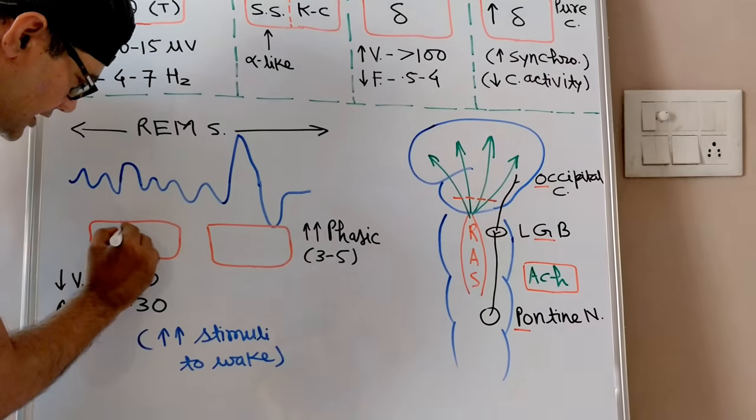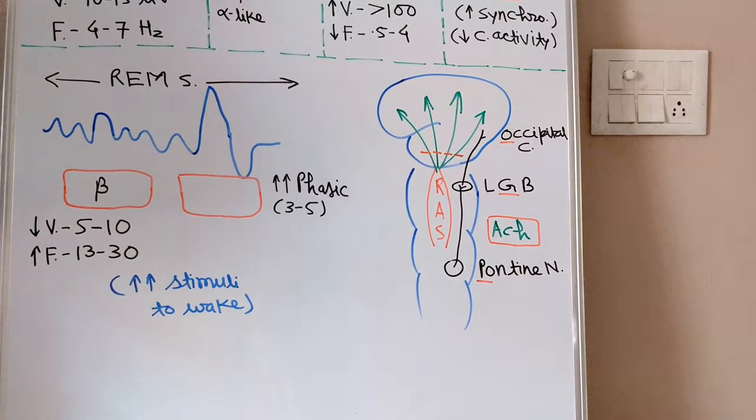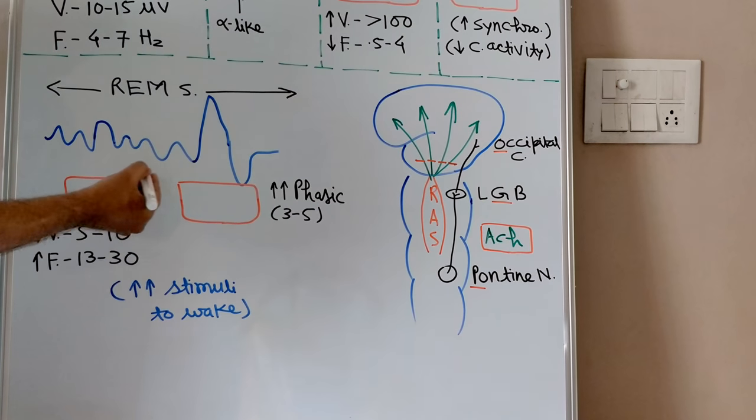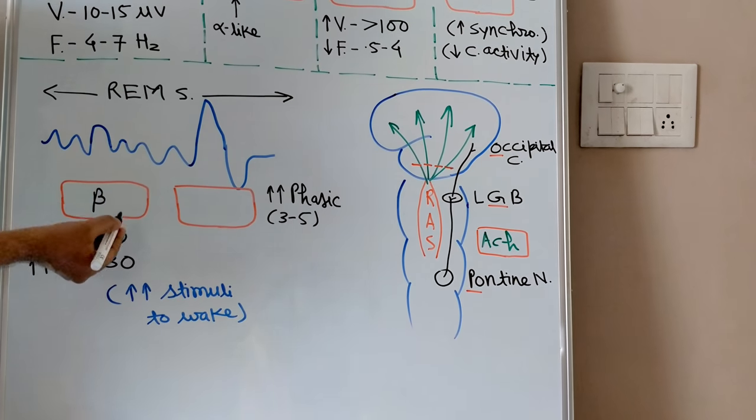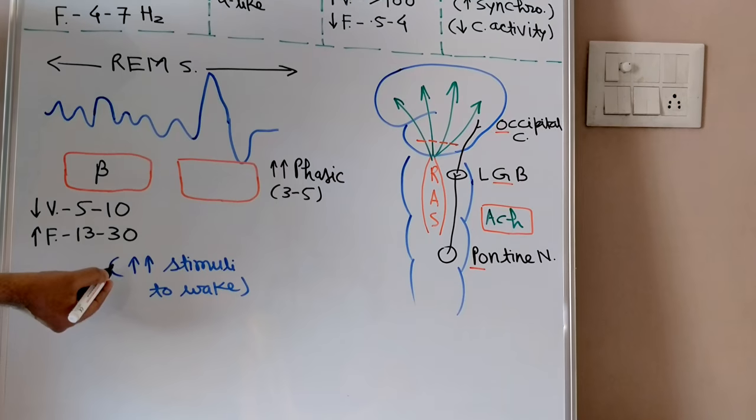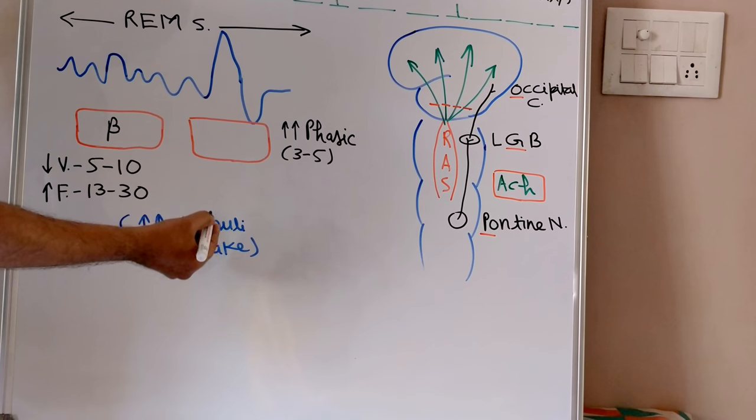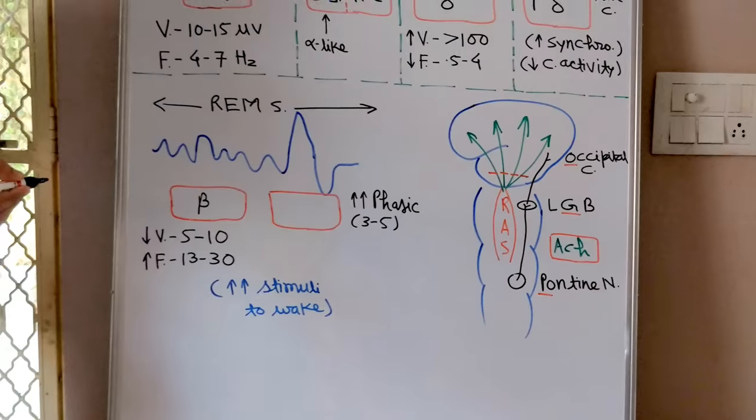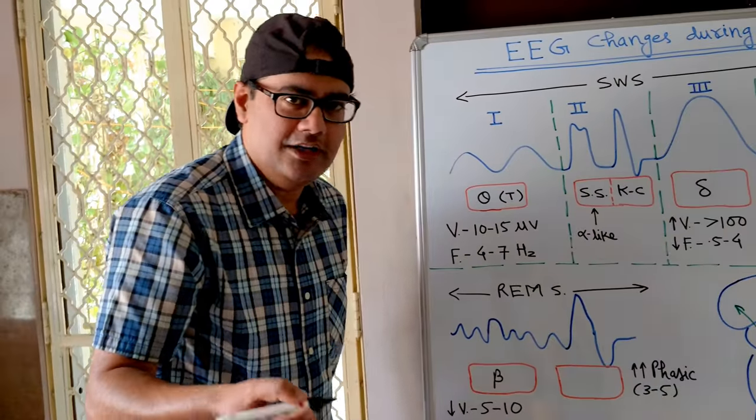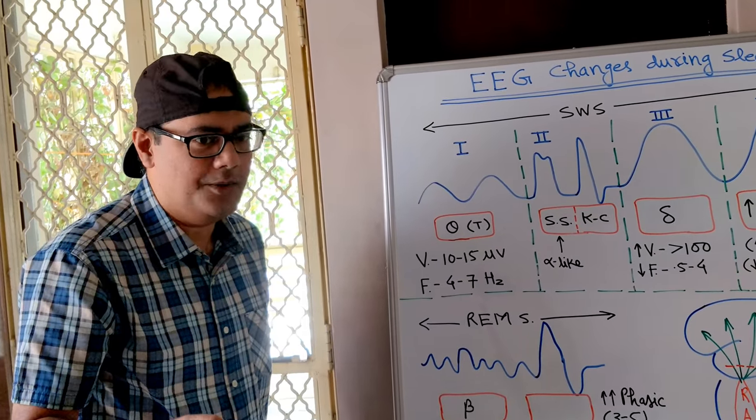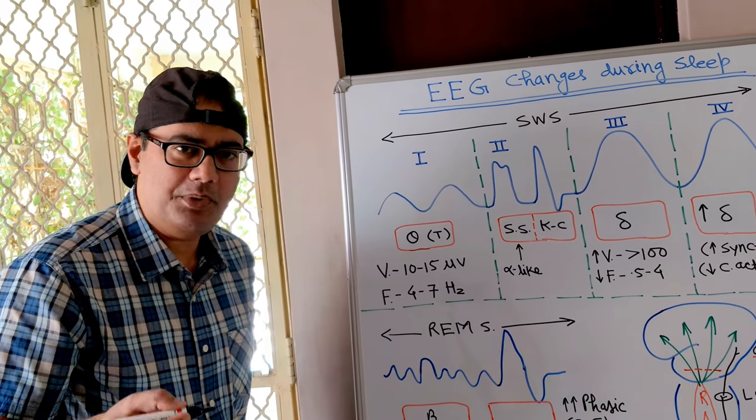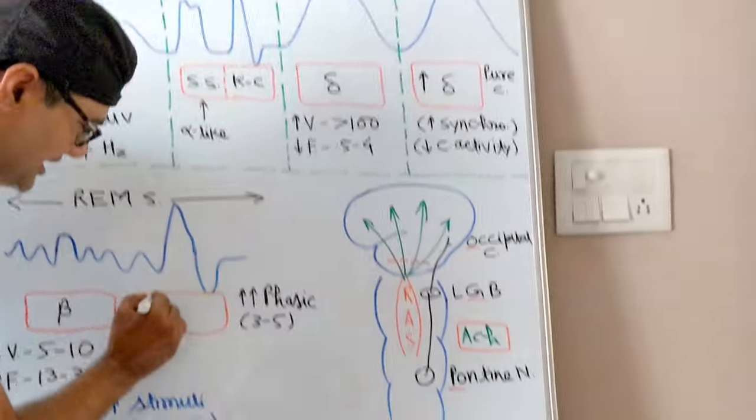sleep beta waves are recorded suggestive of high cortical activity. So in REM, on one hand beta waves, other hand highest strength of stimulus or stimuli are needed to wake a person. That's why REM sleep is called paradoxical sleep. Along with beta